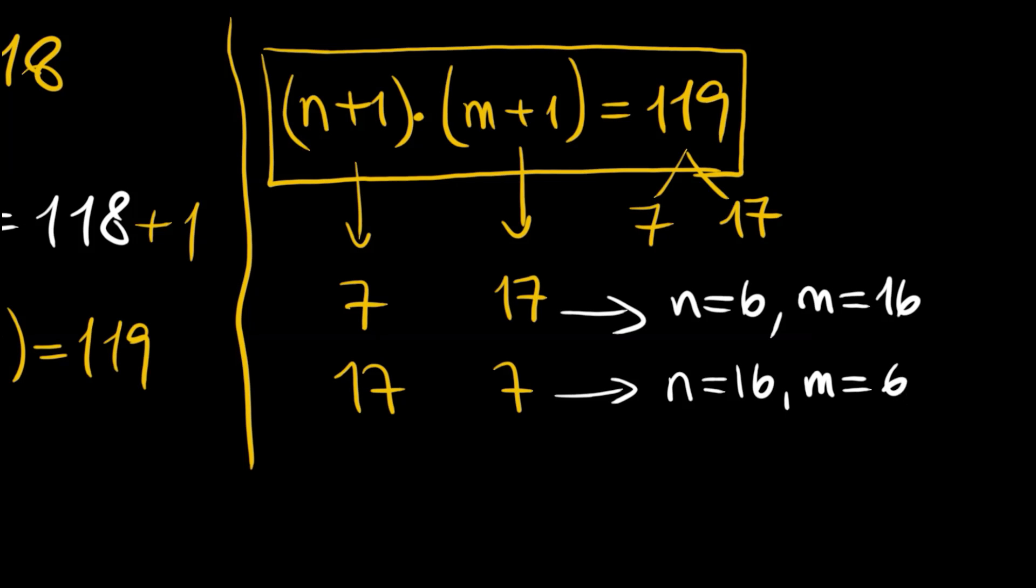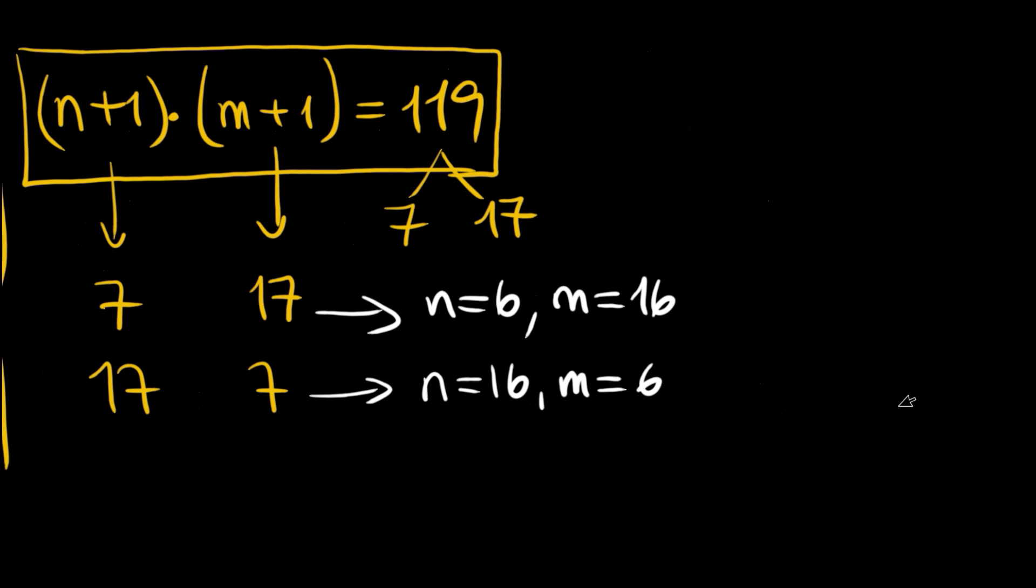And if vice versa, then n is 16 and m is just 6. In positive integers we have only these two solutions, and in both cases the result here for m plus n is 22.